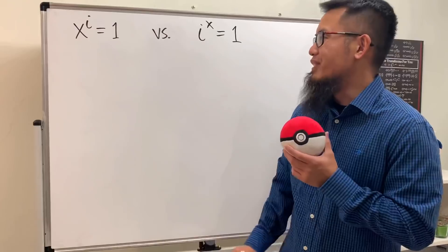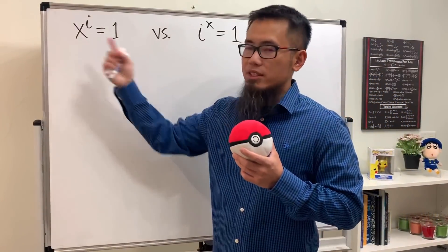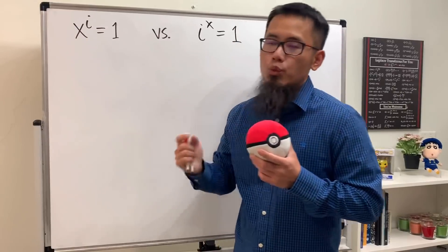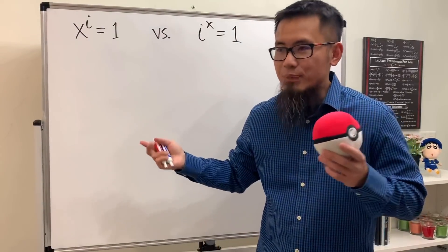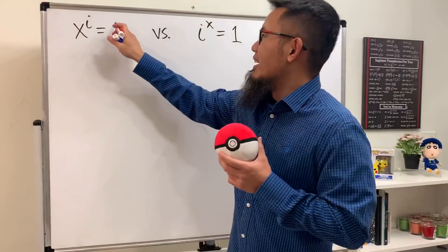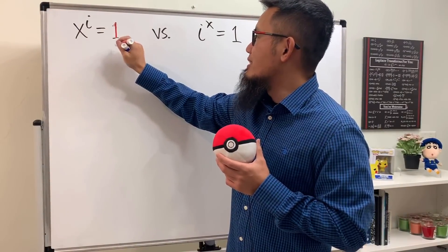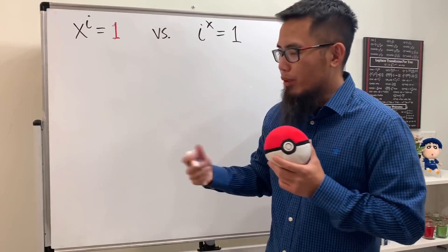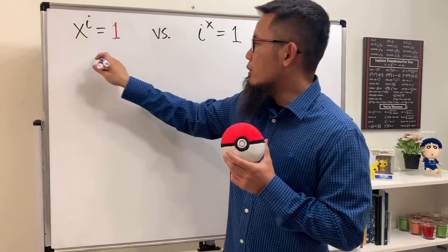Let's look at the first one. Of course, you can say x is equal to 1, because 1 to the i power will give you 1. But we have a lot more answers than that. To find out all the solutions, we will have to look at the 1 and bring that to the complex world.